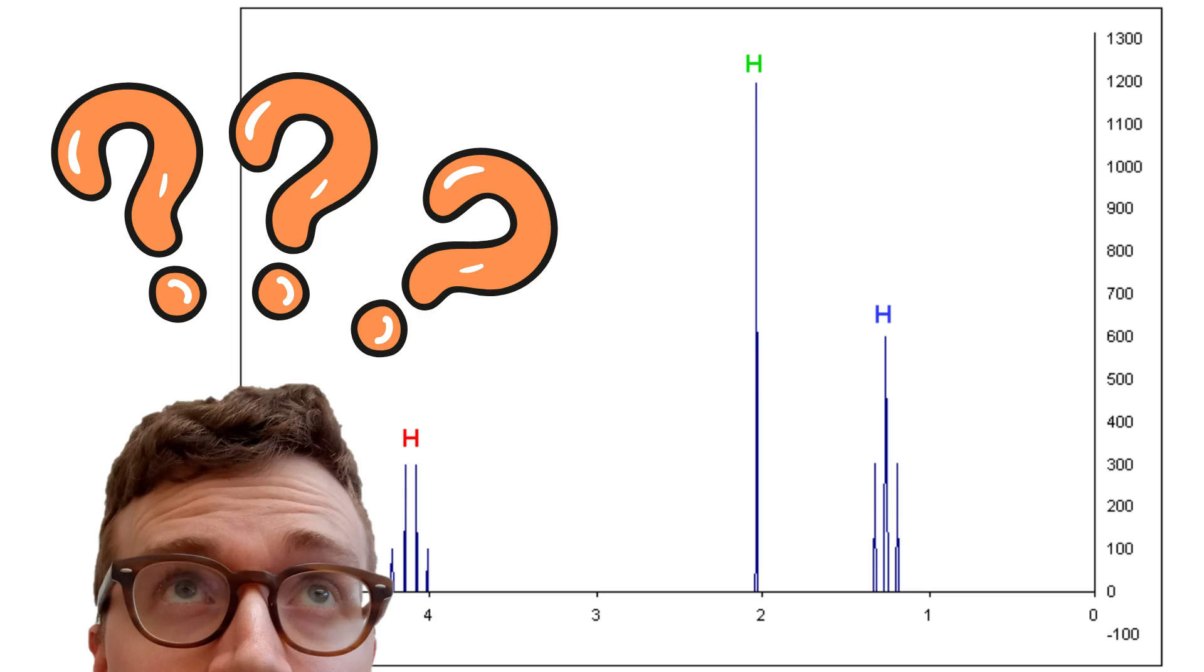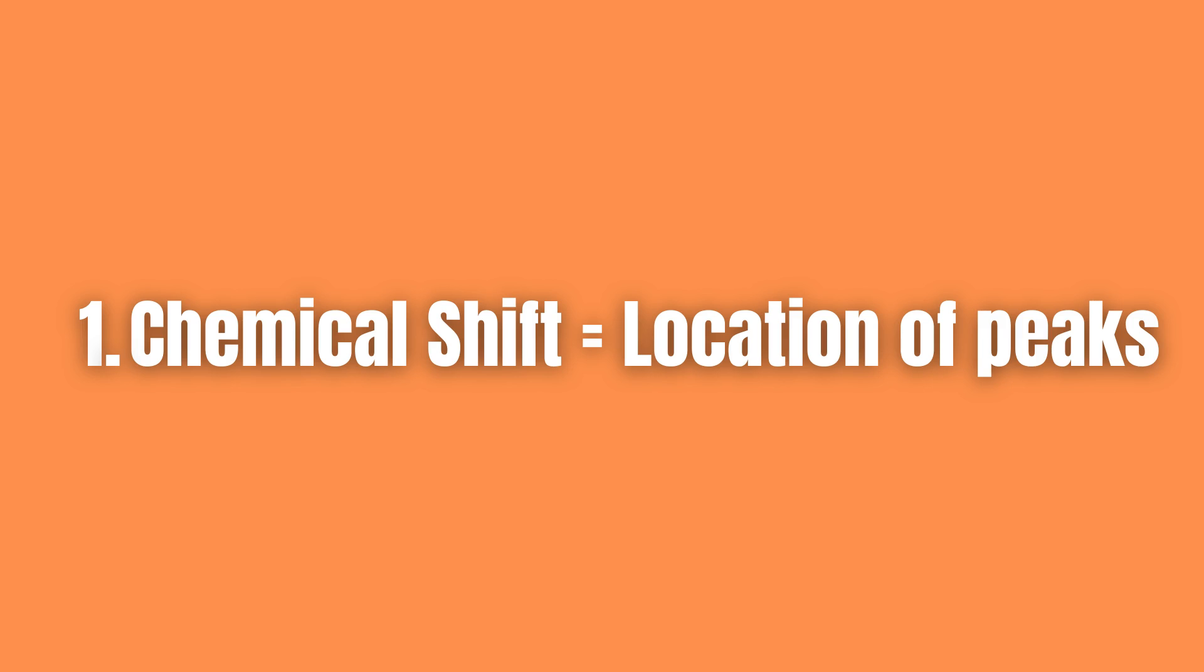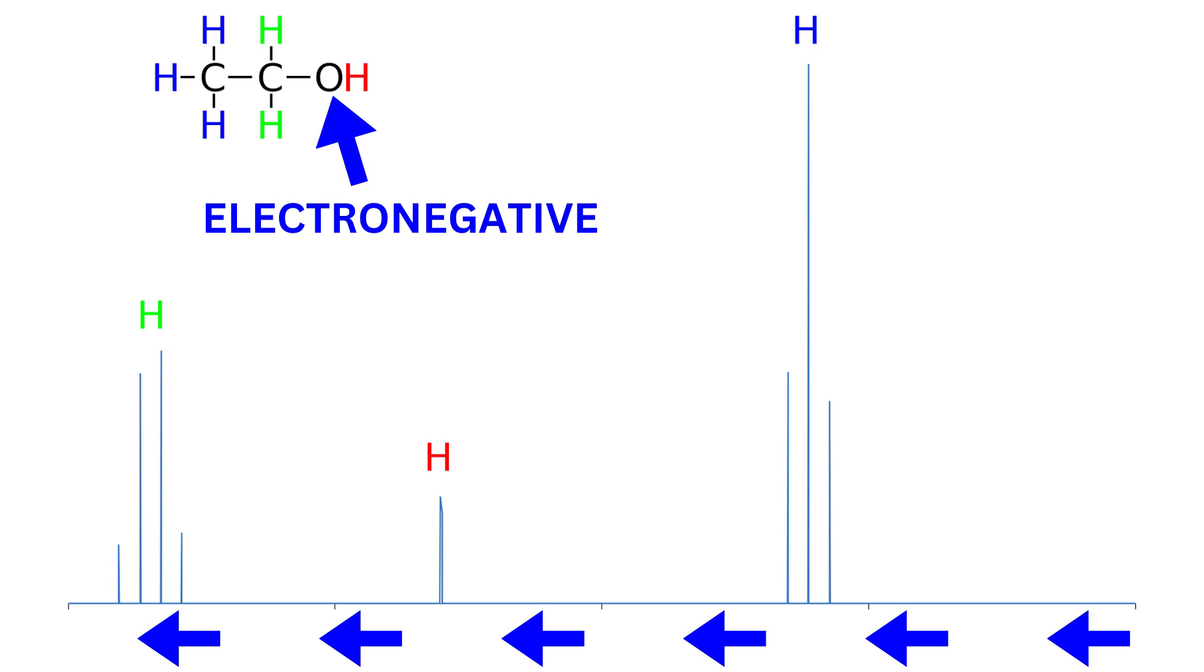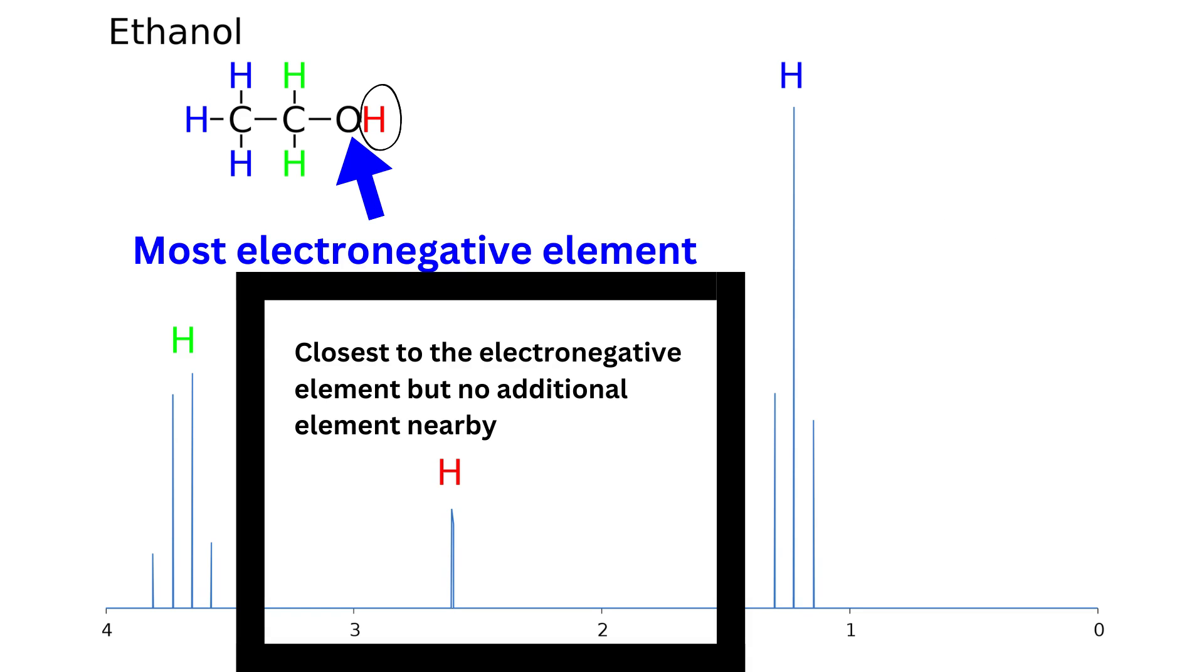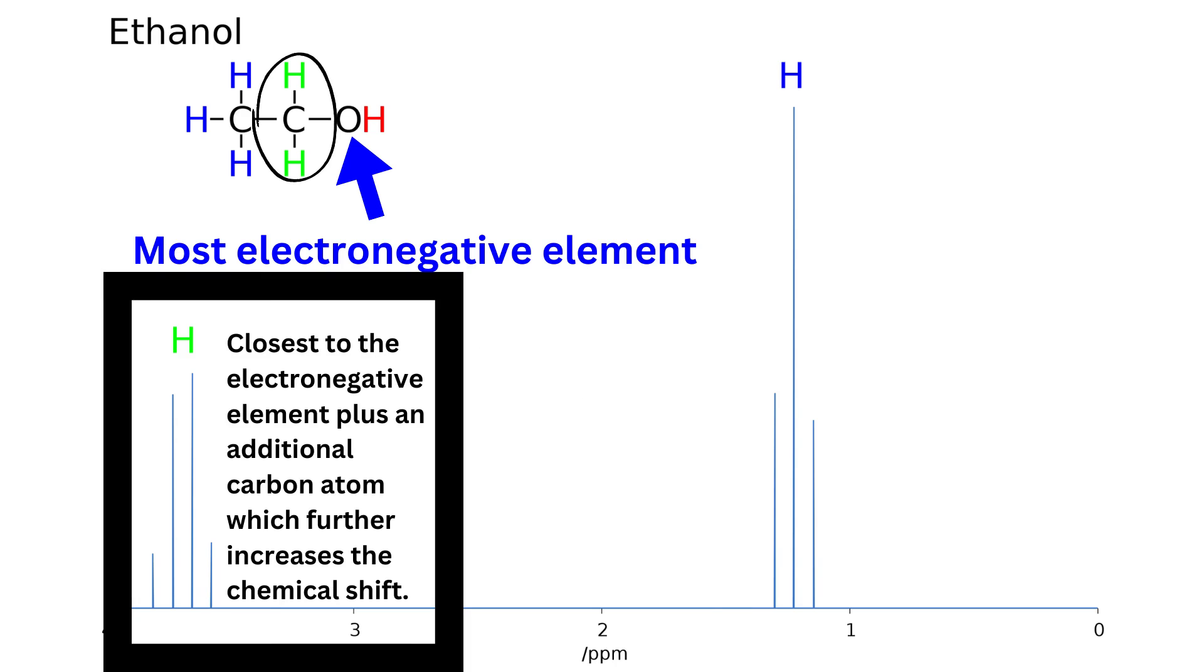To determine the number of signals in an NMR spectrum, you only need to consider the different chemical shifts of the hydrogens in the molecule. The chemical shift is inversely proportional to the distance between the hydrogen and electronegative elements. More simply put, hydrogens that are closer to any electronegative elements are more chemically shifted to the left. Let's do three quick examples.